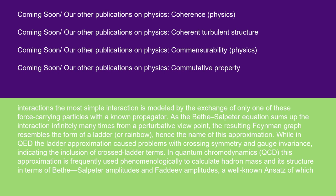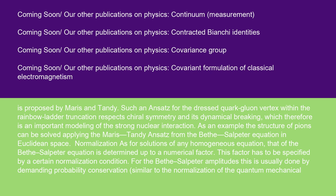In quantum chromodynamics, QCD, this approximation is frequently used phenomenologically to calculate hadron mass and its structure in terms of Bethe-Salpeter amplitudes and Faddeev amplitudes, a well-known ansatz of which is proposed by Maris and Tandy. Such an ansatz for the dressed quark-gluon vertex within the rainbow ladder truncation respects chiral symmetry and its dynamical breaking, which therefore is an important modeling of the strong nuclear interaction.